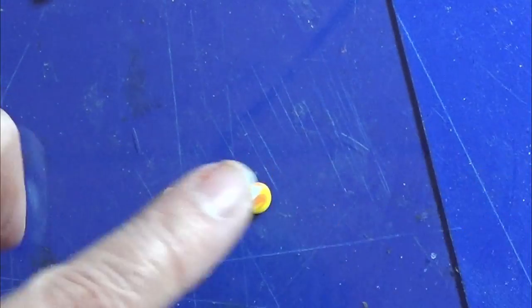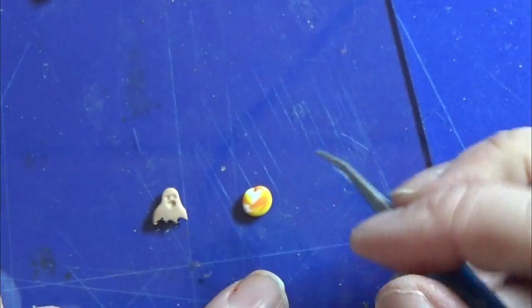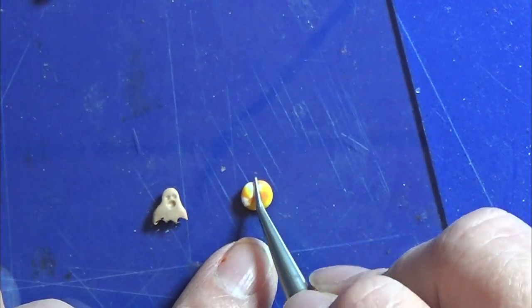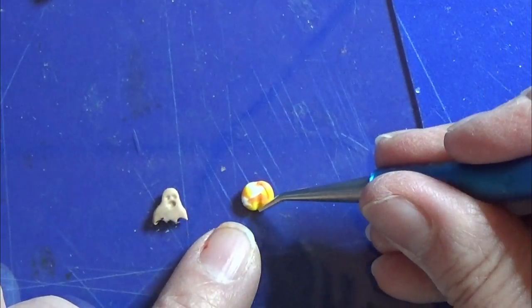Taking another piece of rest clay and pushing it flat. From this we are going to make a little pumpkin. So I am just shaping the pumpkin like I want it to be.